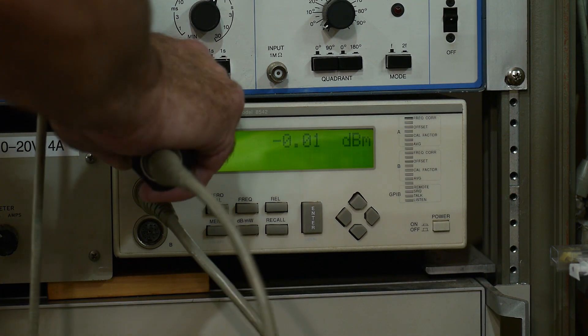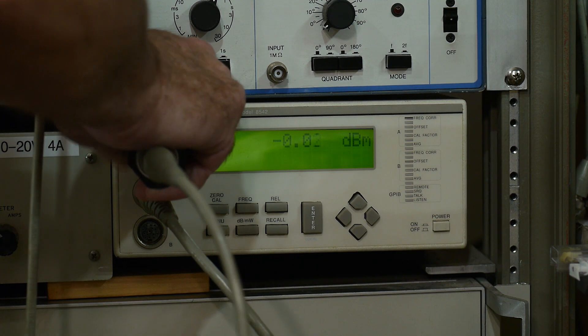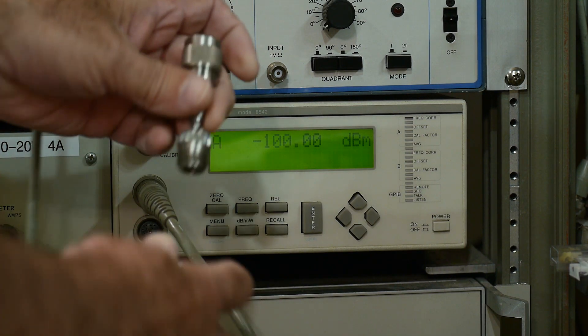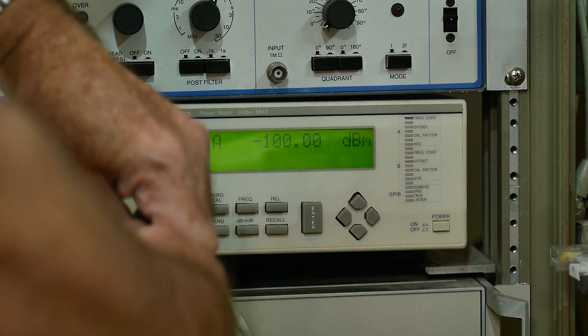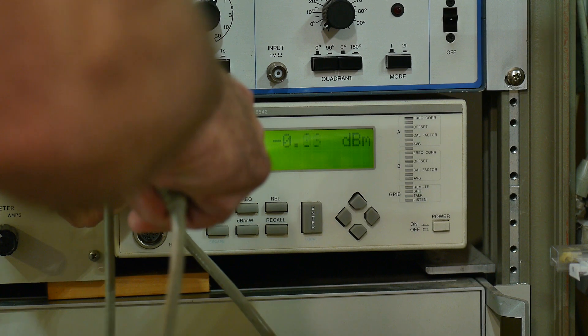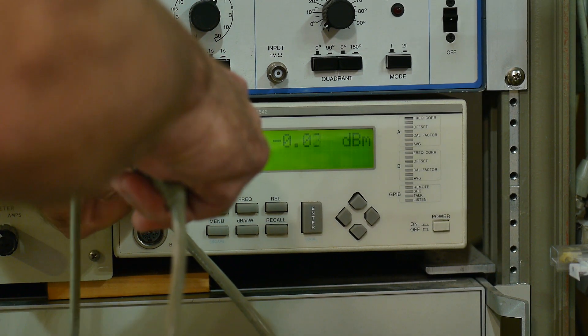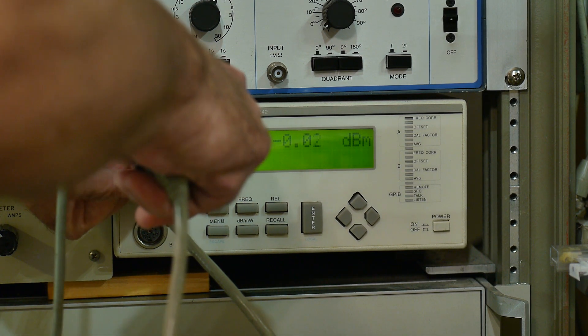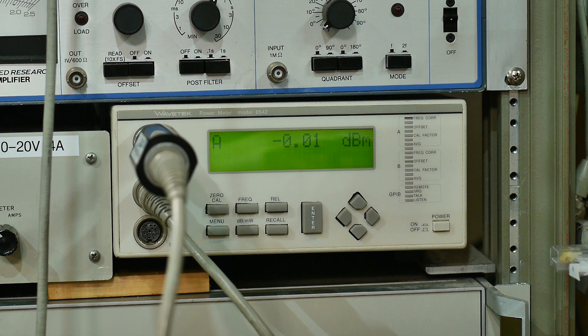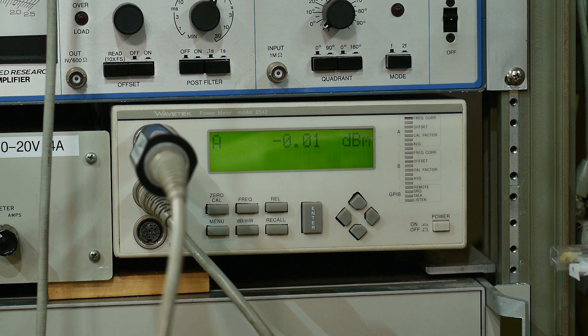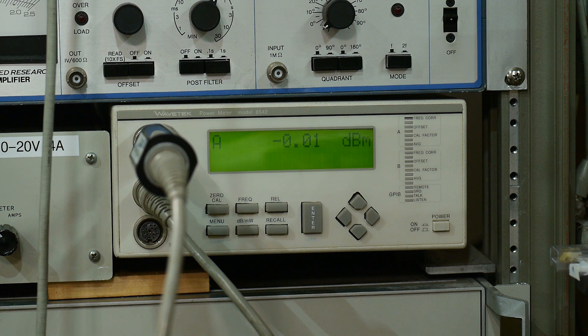So quickly, before we get any temperature drifts and everything, we are going to insert our unit. I'll put half of it over here and half of it over here. Now we've inserted that into the system, and we get a 0.01 dB loss. So 0.01 dB of insertion loss. That's pretty small.